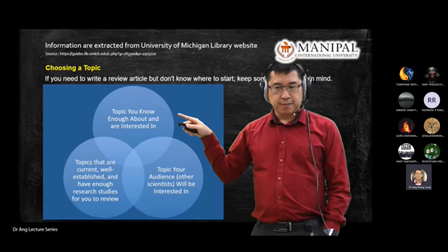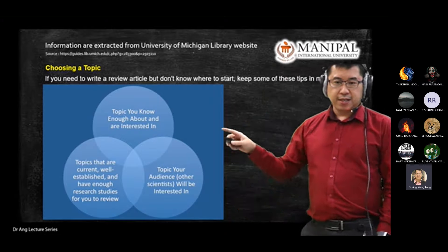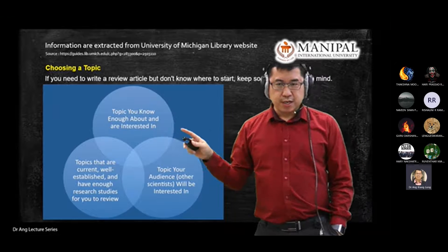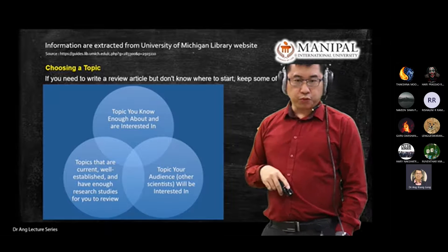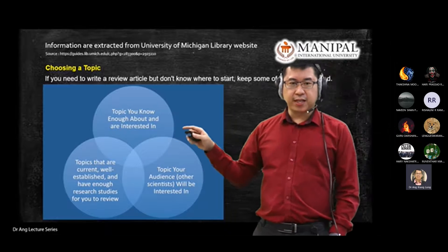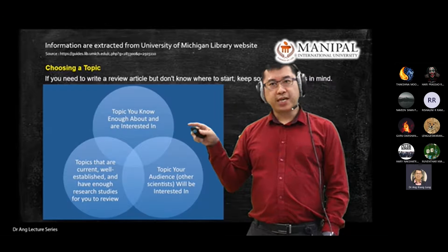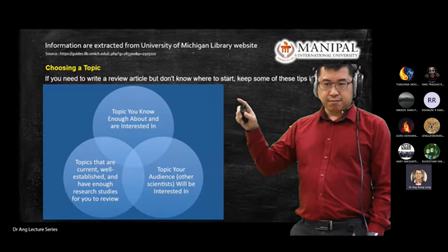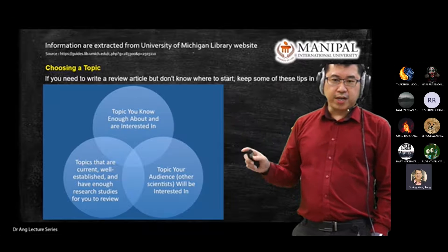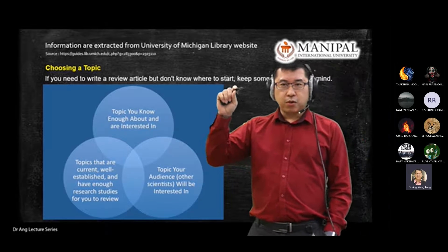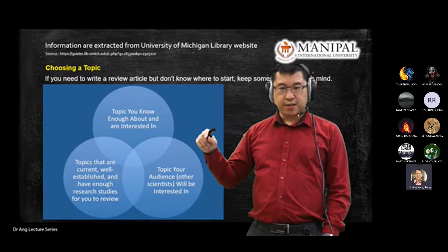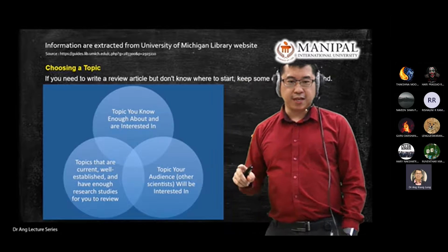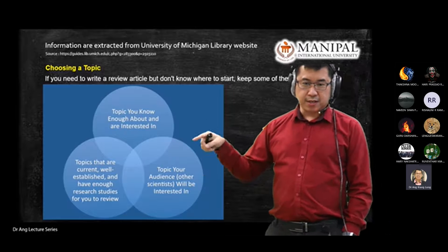Today your homework is to discuss with your partner. Next lecture I will give you an Excel file in Teams — you go fill in your group. There are eight of you, so I expect four groups: Group A, Group B, Group C, Group D. Fill in your name there. When the file is ready, I will message in the WhatsApp group.